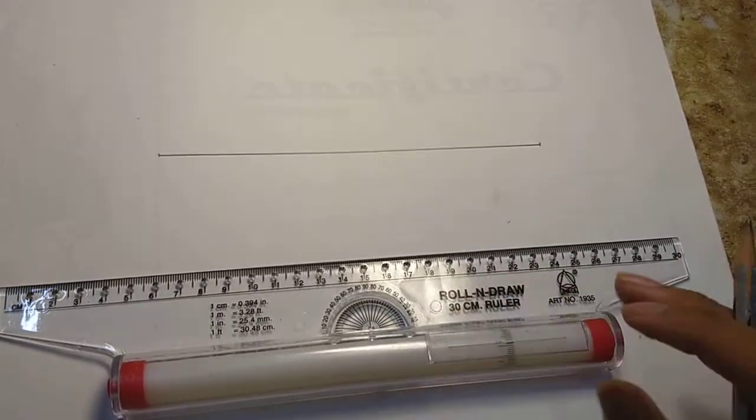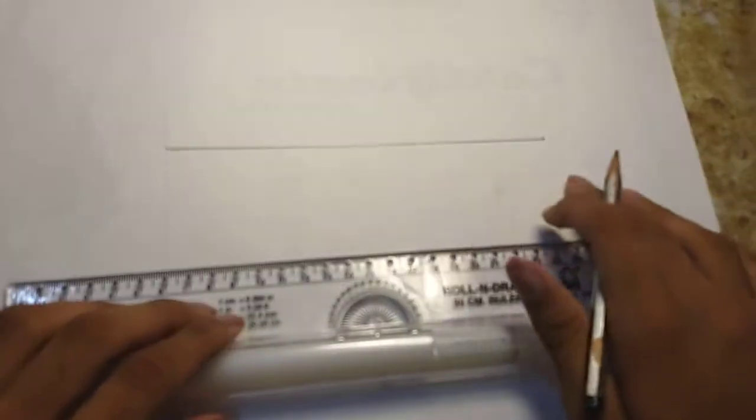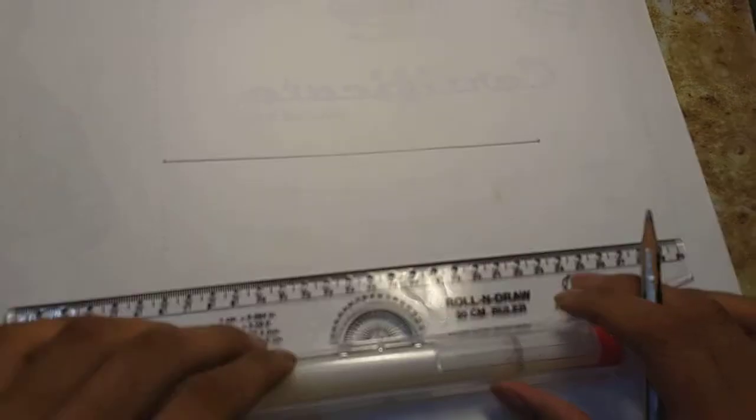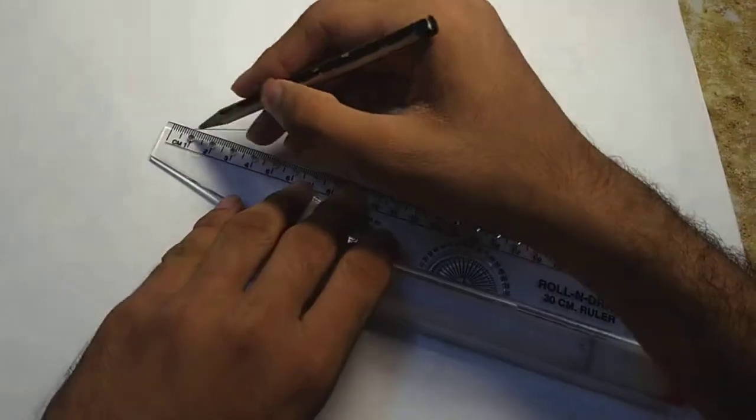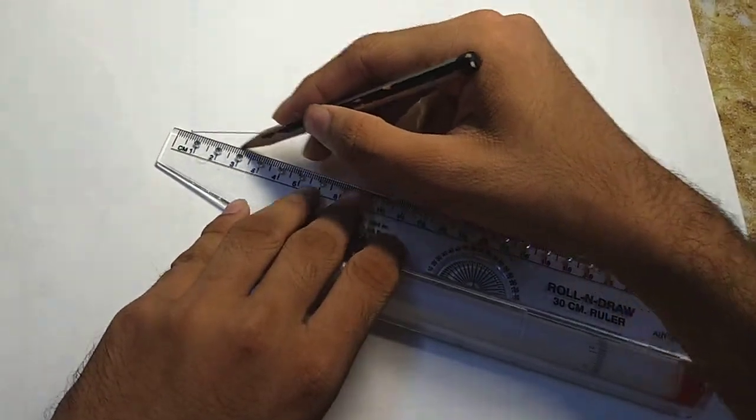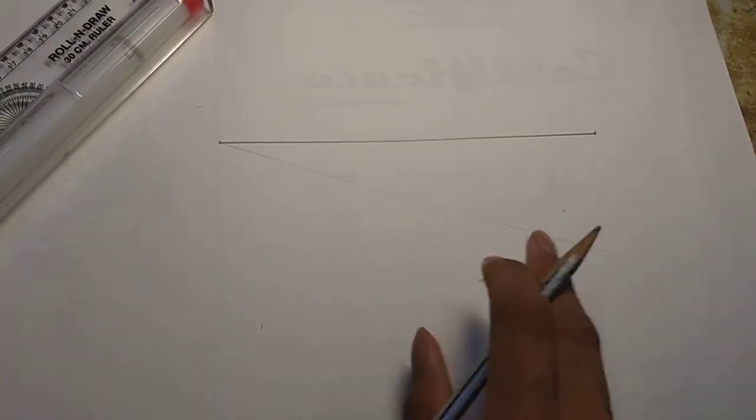How to divide a line into equal parts. Suppose this is my given line. You will draw a 30 degree or any acute angle, draw it like this. Okay, it will be a rough, light line.